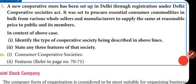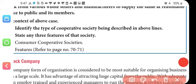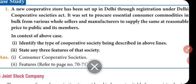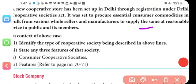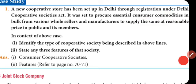In the context of the above case, identify the type of cooperative society being described. Looking at what they are doing — purchasing consumer goods — this is not a housing cooperative society, nor a marketing cooperative society, nor a producers cooperative society, nor a credit cooperative society. This is a consumer cooperative society, dealing in consumer commodities. All these features are the features we will mention in our answers.